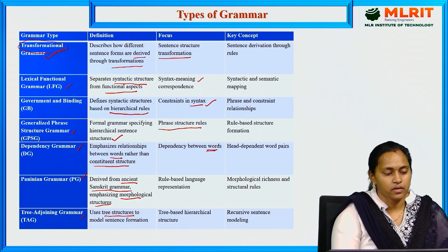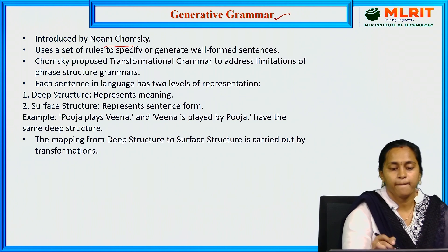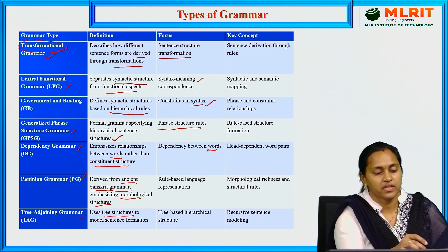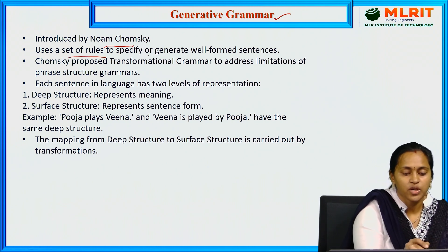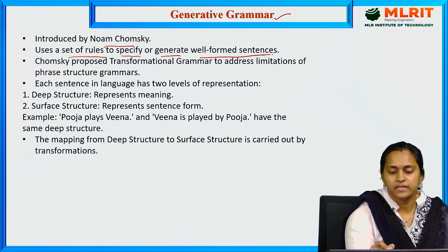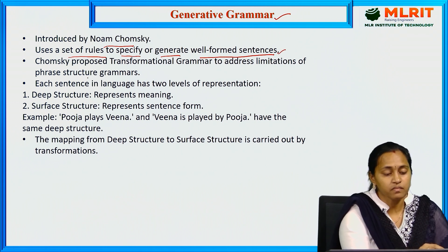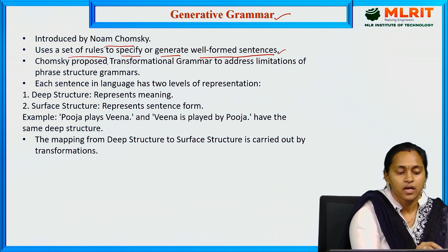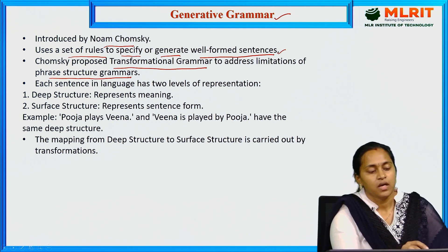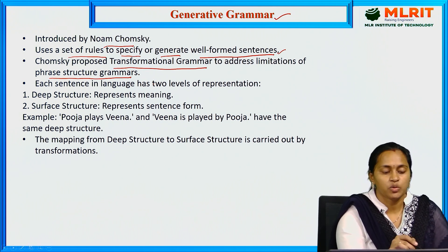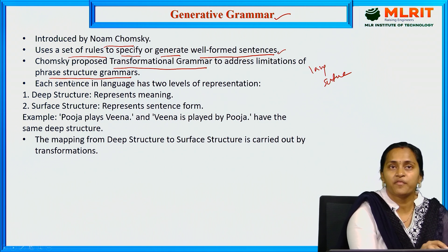According to all these grammars, Chomsky introduced generative grammar. It uses a set of rules to specify or generate well-formed sentences. Chomsky argued that transformation grammar is more efficient to generate language sentences compared to phrase structure grammars.